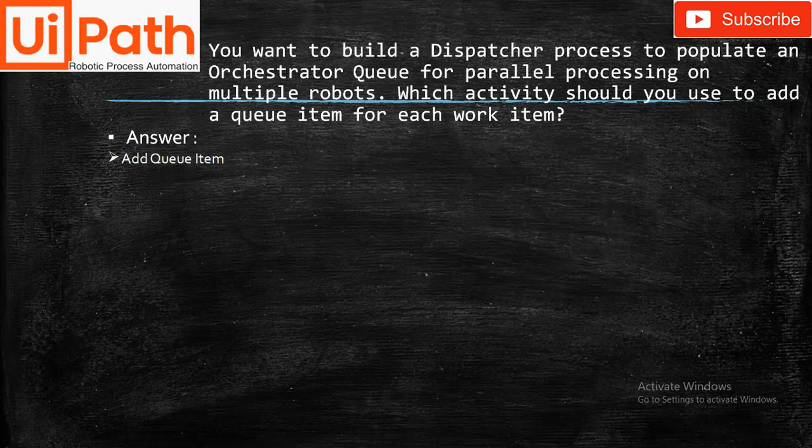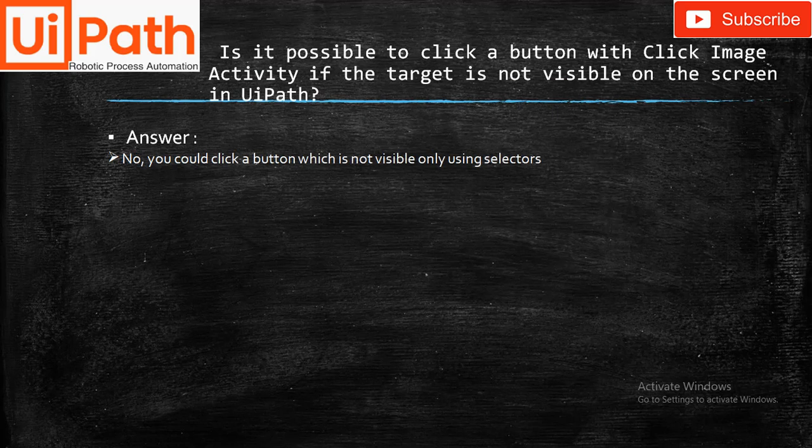You want to build a dispatcher process to populate an Orchestrator queue for parallel processing on multiple robots. Which activity should you use to add a queue item for each work item? The answer is Add Queue Item. Is it possible to click a button with the Click Image activity if the target is not visible on the screen? No, we cannot click a button which is not visible — only using a selector.